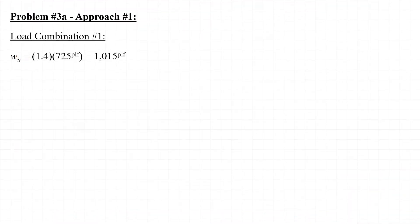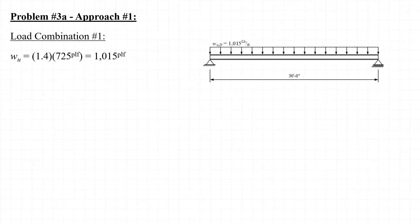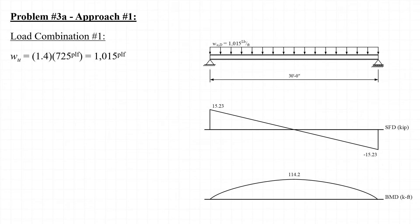Using approach number one, we'll start off by applying the load factors from load combination number one. Since load combination number one includes only dead load, the resulting factored loads applied to the beam consist only of a uniformly distributed load with a magnitude of 1015 pounds per linear foot. From this loading, we can sketch the shear force and bending moment diagrams. The maximum shear force occurs at each end of the beam with a magnitude of 15.2 kips, and the maximum bending moment occurs at mid-span with a magnitude of 114 kip-feet.